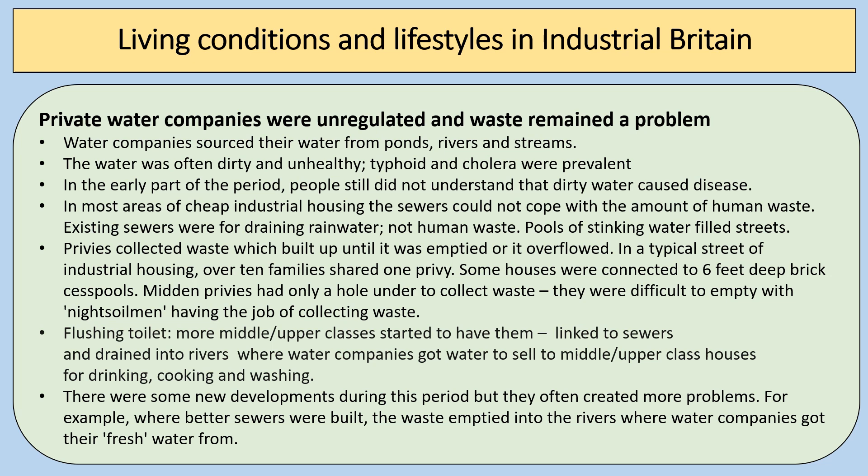Private water companies were unregulated. They sourced water from ponds, rivers and streams without cleaning it, so the water was dirty and unhealthy, spreading typhoid and cholera. People didn't understand that dirty water caused disease. In most areas of cheap industrial housing the sewers could not cope with human waste — existing sewers were mainly for draining rainwater. Pools of stinking water and sewage filled the streets and rivers. Privies collected waste that built up until it was emptied by a night soil man. In a typical street, over 10 families might share one privy, and some houses were connected to six-foot-deep brick cesspools.